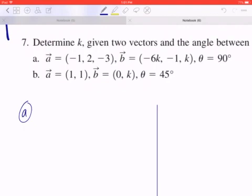Write down the fact that A dot B equals the magnitude of A times the magnitude of B, cosine the angle between them.